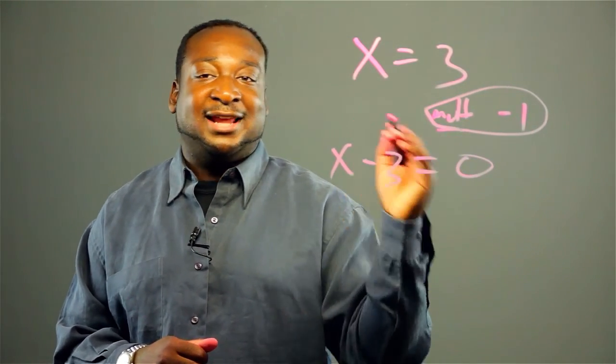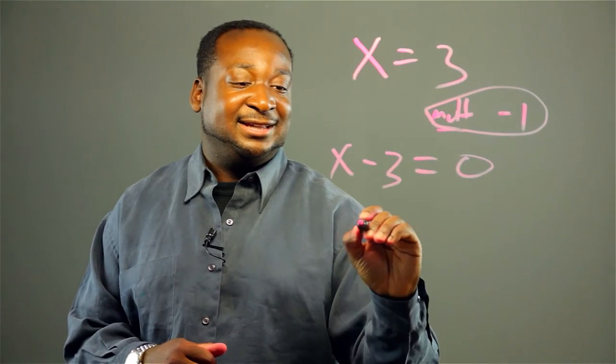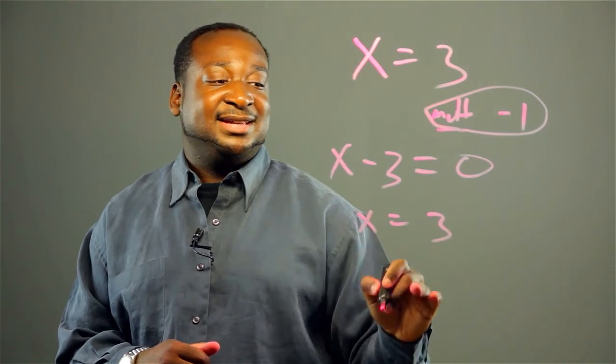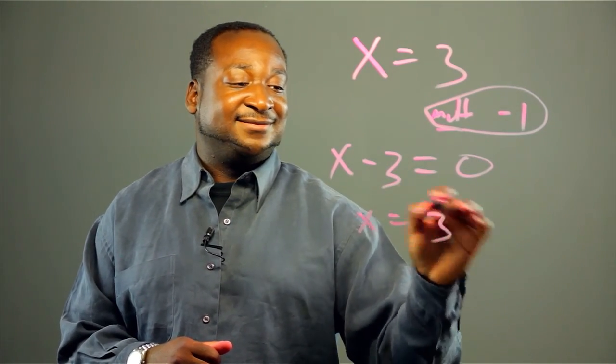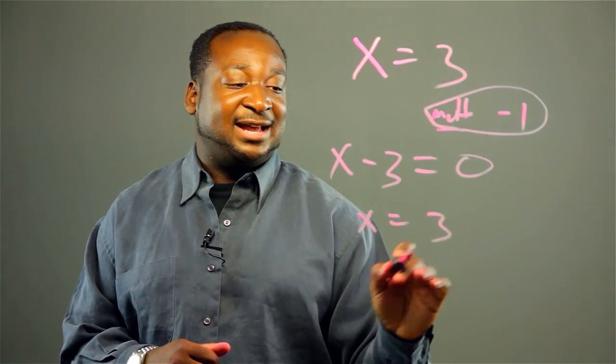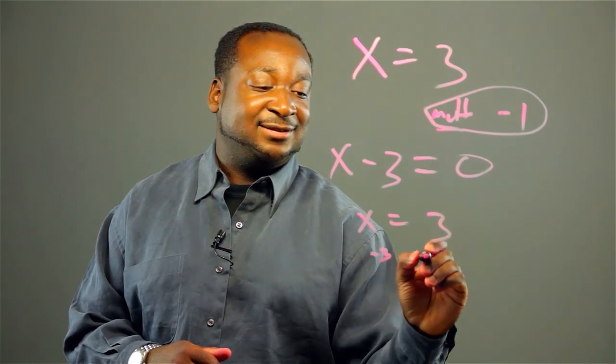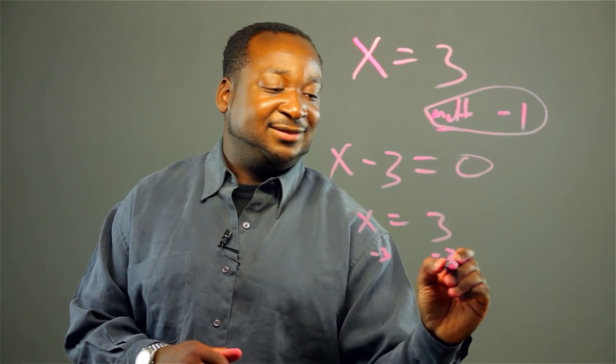But the logic behind that is, if X equals 3, then if I want to get a 0 on this side, then I would add both sides by the opposite of 3. So I'll put negative 3 and negative 3.